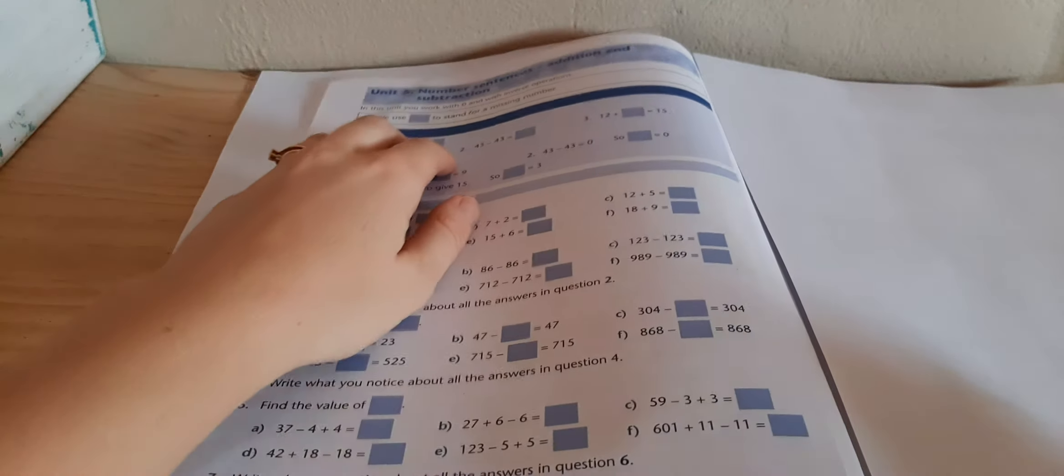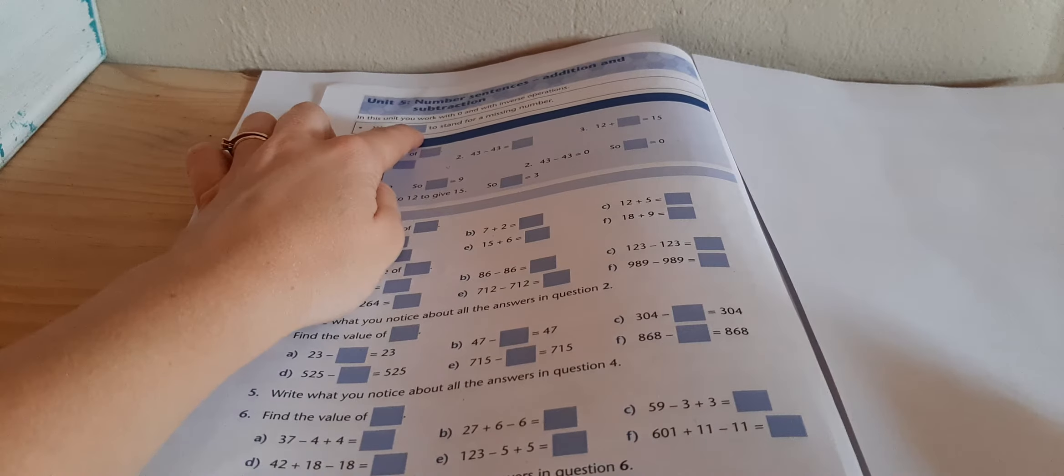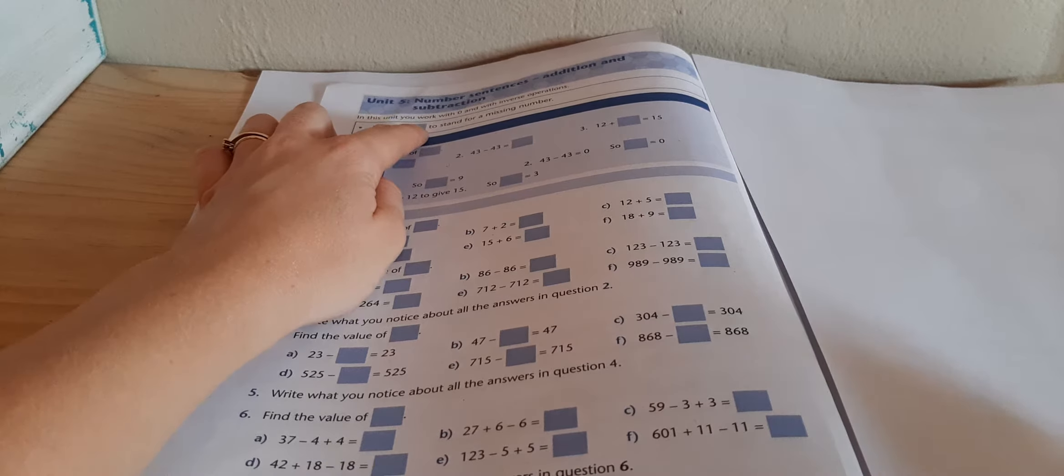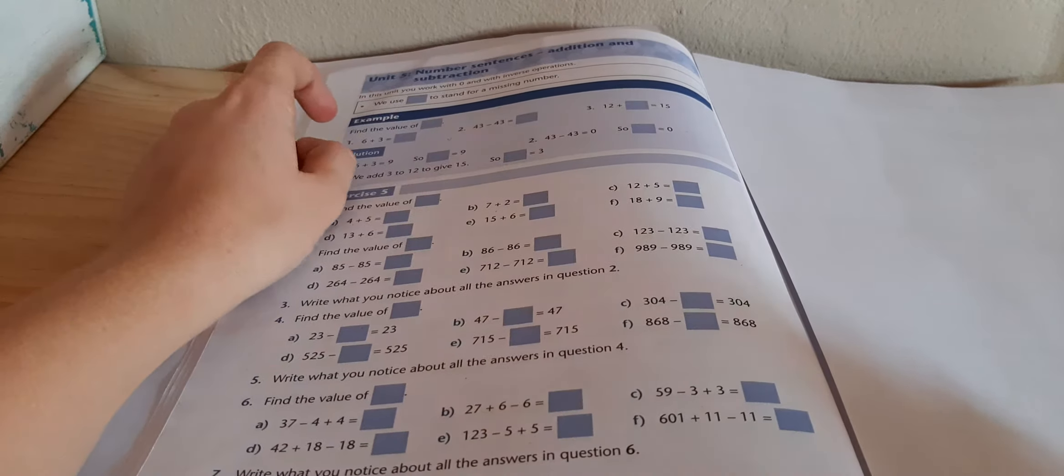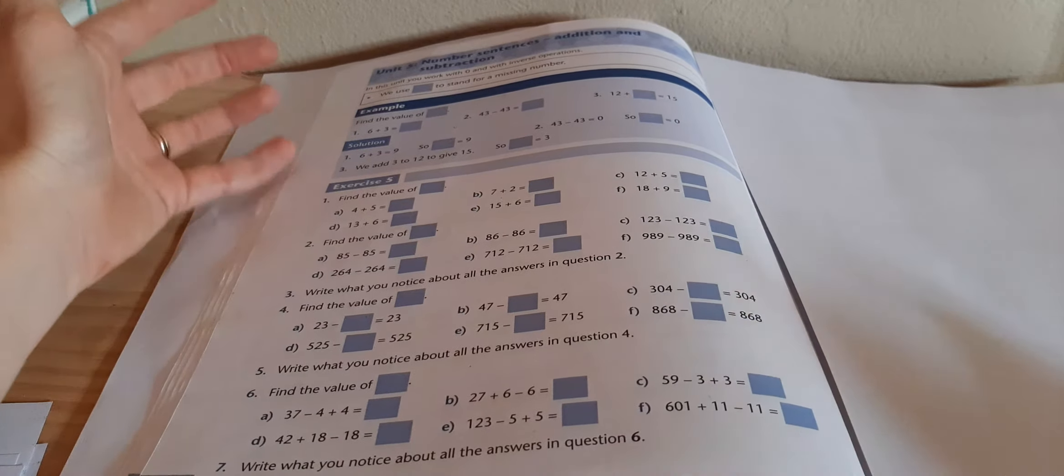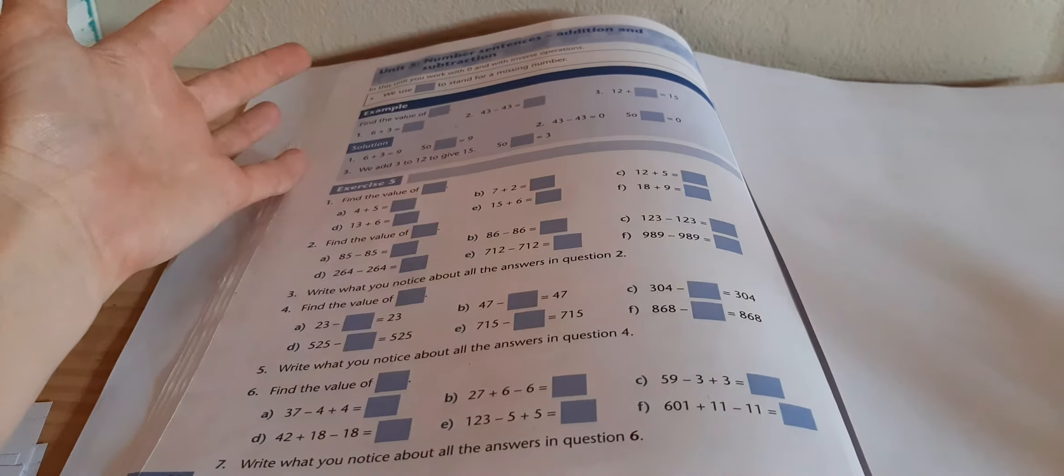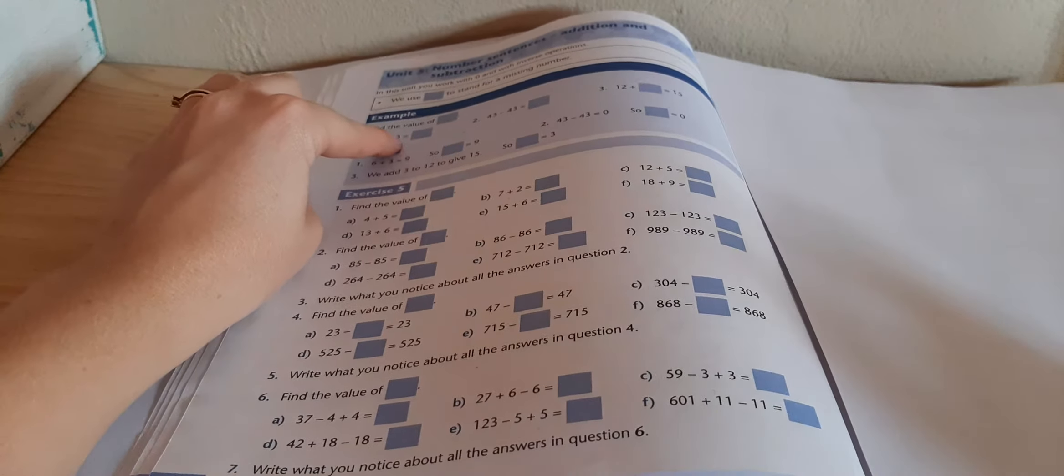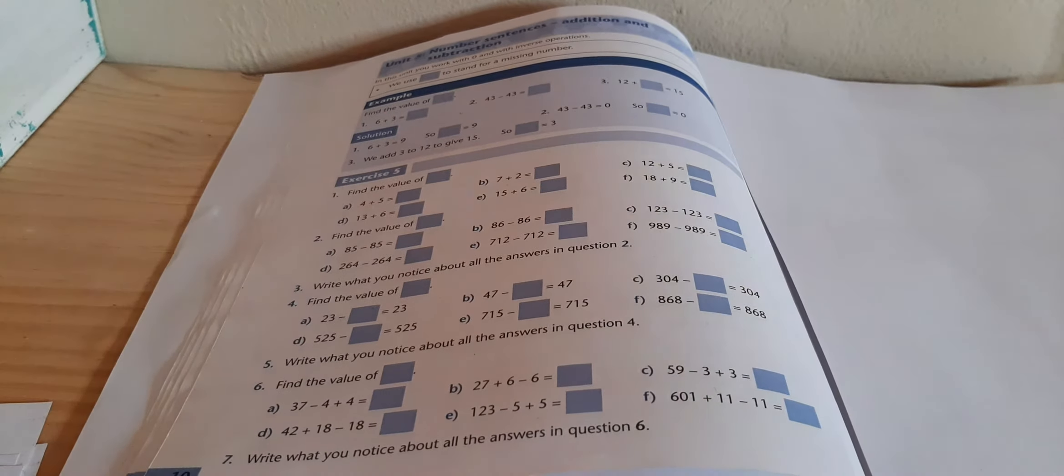The textbook on page 10 tells us that if you see a blank there, it's asking you to fill that blank in with a number. So for an example, it says find the value of blank and you have got 6 plus 3. So all you have to do is work out what 6 plus 3 is and fill your answer in the blank.